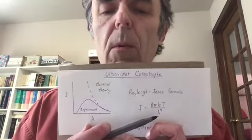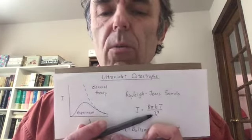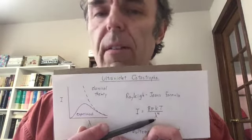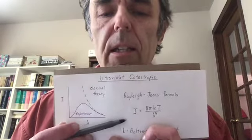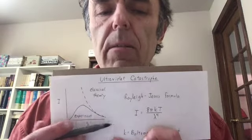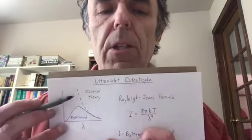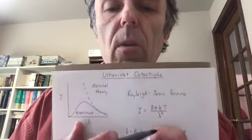Since it's divided by wavelength to the fourth, at very long wavelengths out in the infrared and radio part of the spectrum, the intensity is very small. But as the wavelength gets small, the intensity becomes very big in the visible and especially in the ultraviolet part of the spectrum.